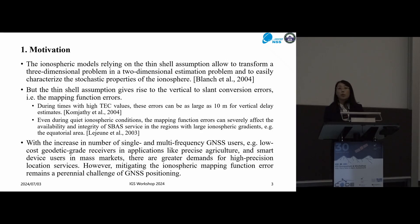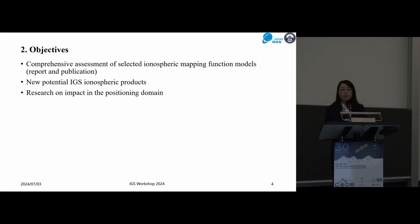in the equatorial regions with large ionospheric horizontal gradient. With increasing numbers of GNSS users, there are greater demands for precise positioning service. So, how to mitigate the ionospheric mapping function errors remains the perennial challenge of GNSS positioning. That's why we have this study group.